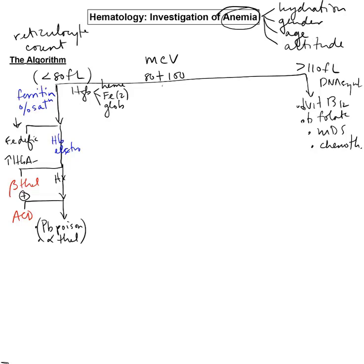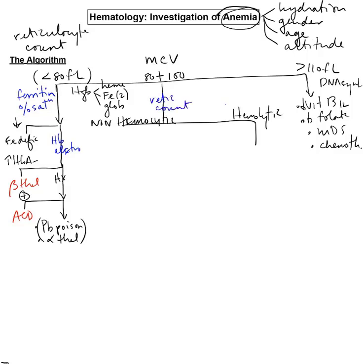The biggest category is going to be our normocytic anemias, and these get divided into two big groups: hemolytic, which means there is increased consumption of the red blood cells, versus non-hemolytic, which is going to be a decreased production. The way we differentiate those two is with a reticulocyte count. If there's increased consumption, the normal marrow is going to produce more, and so we'll see an increase in the reticulocyte count.